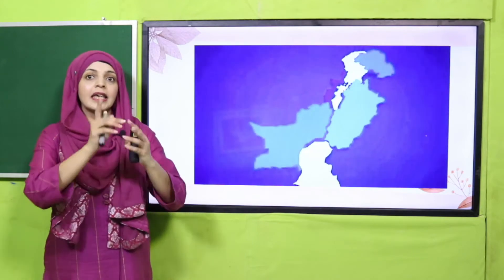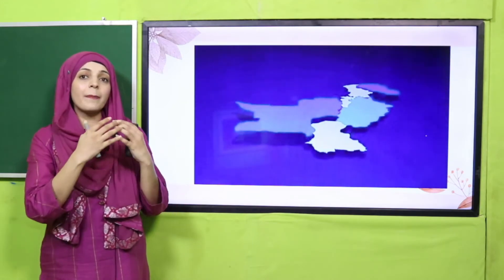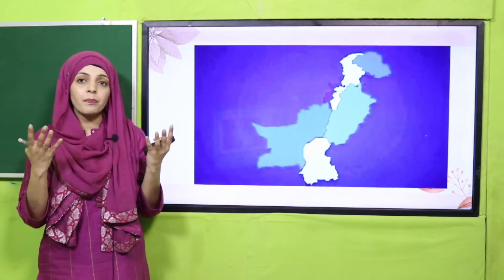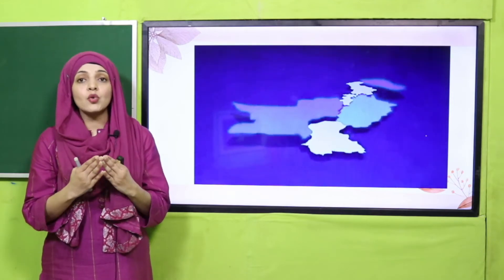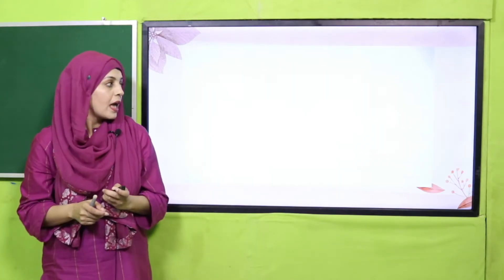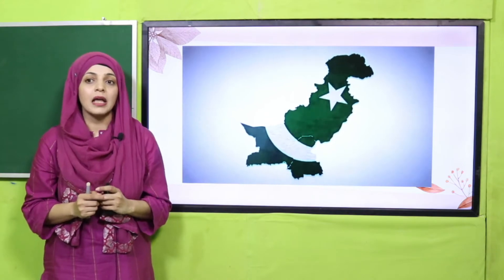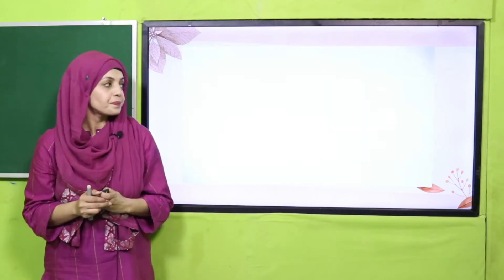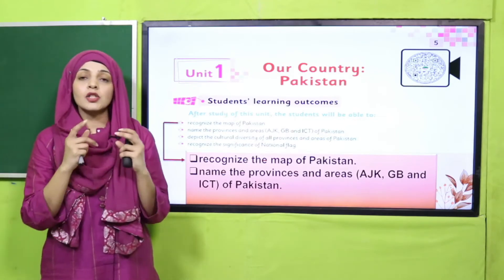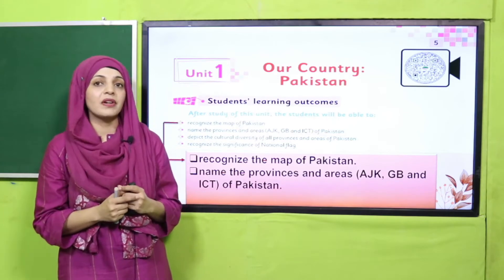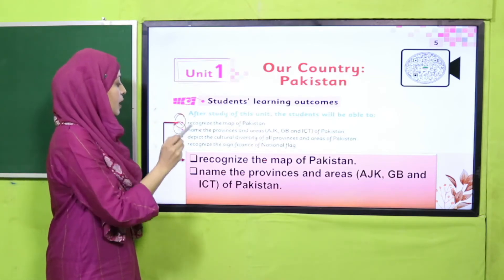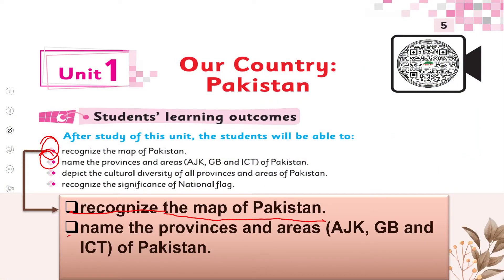Today we will study this. You will be able to recognize the map of Pakistan — this is the map of Pakistan. You will also learn that there are different provinces in the map of Pakistan and you will be able to name those provinces. Let's quickly look at the student learning outcomes on page number five. Today we will cover two SLOs: you will recognize the map of Pakistan, and you will name the provinces and areas of Pakistan.